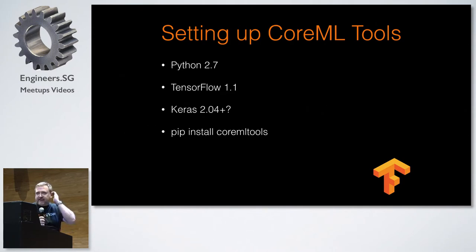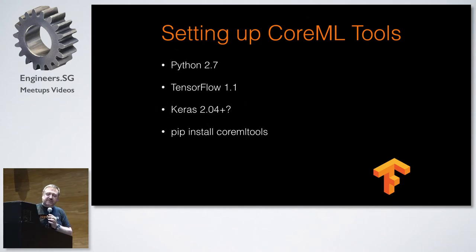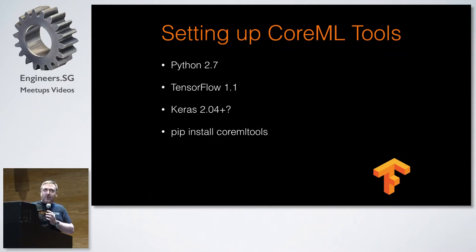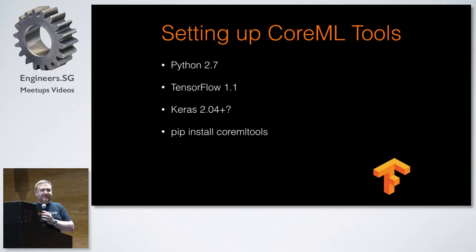To set this up, it's really simple, but it has to be Python 2.7 — unfortunately. It's also still just on TensorFlow 1.1 at the moment; I imagine that will be updated over time. Don't forget iOS 11 is still in beta. They also recommend Keras 2.04 at most; we've got 2.06 out now. I found 2.06 mostly worked fine but occasionally had issues. The problem is if you train in 2.06 it doesn't always load well in 2.04 on a different machine.